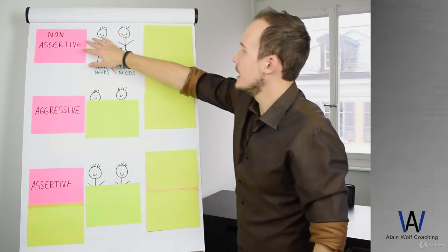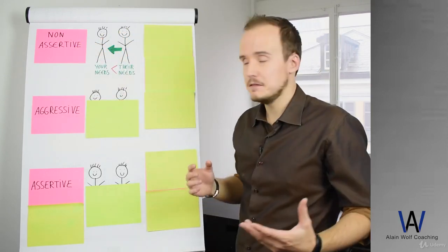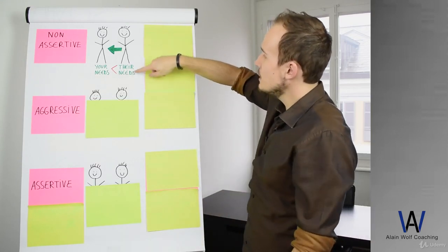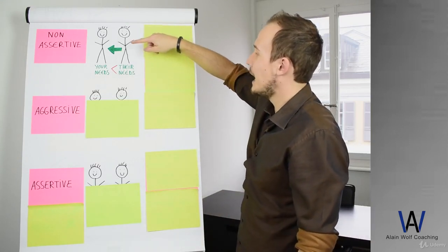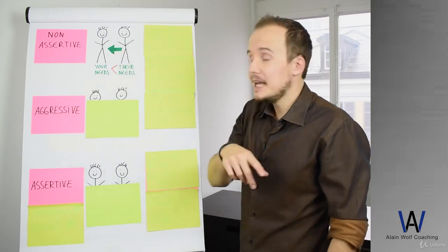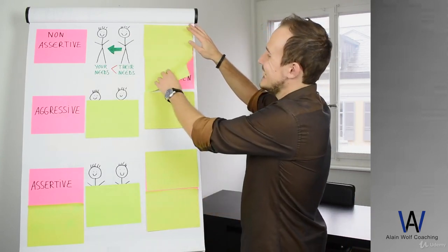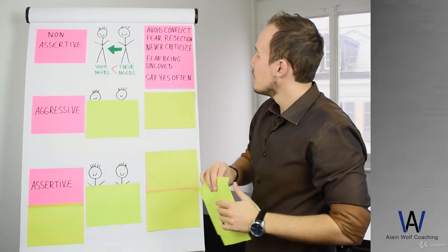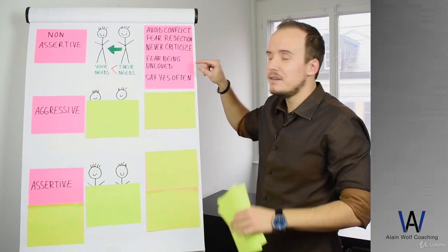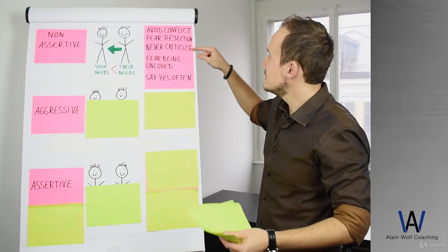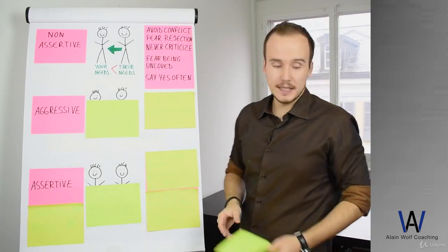The first one is non-assertiveness or being passive. It means that you value other people's needs above yours. It means that you are always saying yes, you fear being unloved, you never criticize, you fear rejection and you avoid conflict.